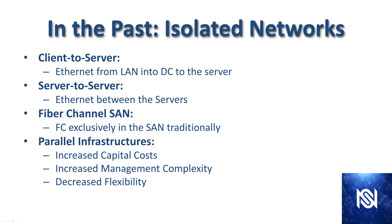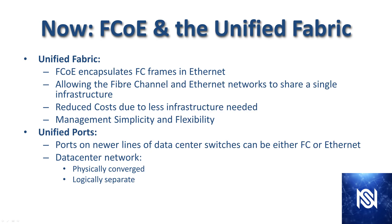So you had a completely separate LAN network, a completely separate server-to-server Ethernet network, and a completely separate Fiber Channel SAN network. With these parallel infrastructures comes increased capital costs because you have far more total devices. Having all those extra devices increases management complexity and gives you a lot less flexibility — if you need to add storage or increase the size of the SAN, you have no choice but to buy more specific SAN devices.